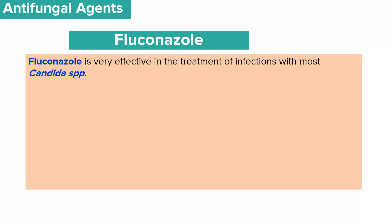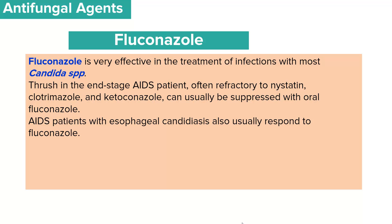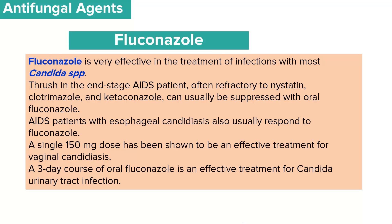Fluconazole provides effective treatment of infections caused by candida species. Thrush in end-stage HIV/AIDS patients is often refractory to nystatin, clotrimazole, and ketoconazole, but fluconazole can effectively treat it. HIV/AIDS patients with esophageal candidiasis usually respond to fluconazole. A single dose of about 150 mg of fluconazole is effective in the treatment of vaginal candidiasis, and a three-day dose of oral fluconazole can manage candida urinary tract infections effectively.